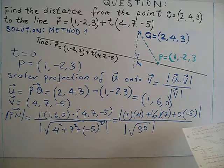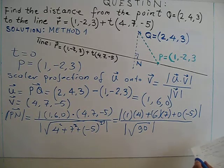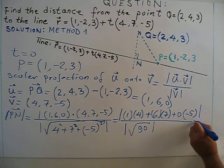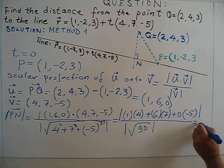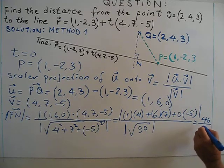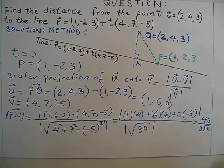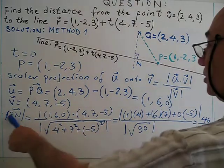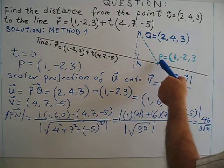So when I work on this, so when I work on this I get the result of 46 over 3 root 10. So this is PN. So I find PN.